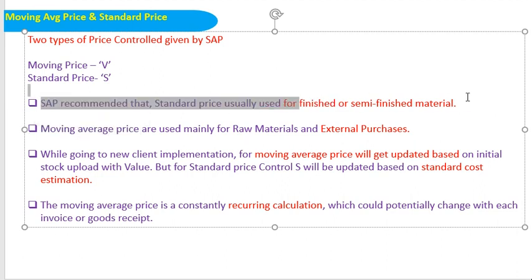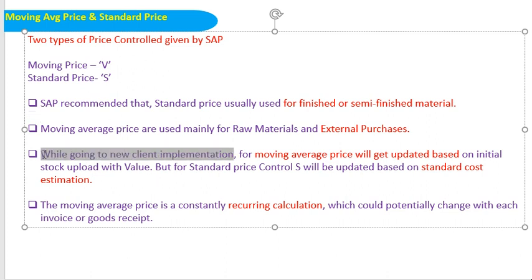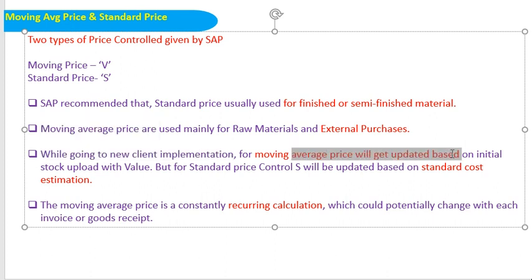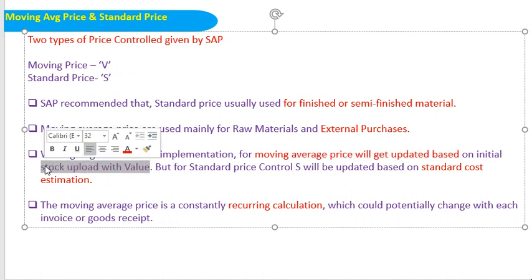So while going to a new client implementation, moving average price will get updated based on the initial stock load with value. At the time of initial stock load with value, moving average price should be considered. Standard price control 'S' will be updated based on standard cost estimations. How the standard cost estimation happens will be covered in coming sessions. For standard cost calculation, standard price should be used.